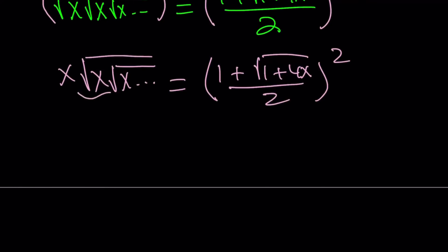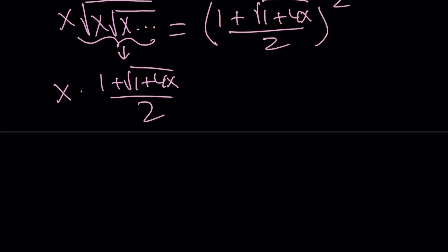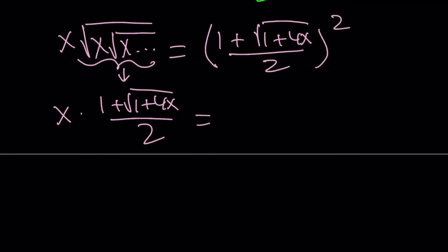Now, notice that this was equal to the right-hand side without the square. So we can safely say that x times, this is equal to x times 1 plus the square root of 1 plus 4x divided by 2. By the way, this is y, and the right-hand side is y squared. Great. So you can also say that x equals y, but that's another story. So now, I'm going to set it equal to this, but that is squared.